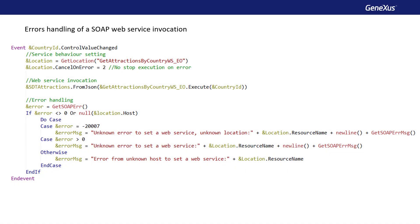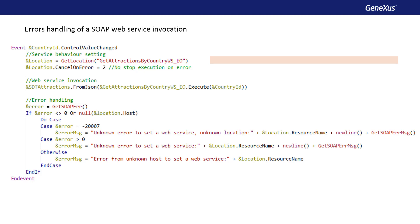When we invoke a SOAP service and assign values to a location variable, we can assign a value to the CancelOnError property, which allows us to obtain the result of the operation and handle errors. The behavior of the service will depend on the value assigned. If we assign the value 0, the program that invokes the web service will always cancel the execution at the end of the invocation — this is the default value. If we assign the value 1, the calling program will cancel the execution if an error occurs. If we assign the value 2, the calling program will not cancel the execution if an error occurs.